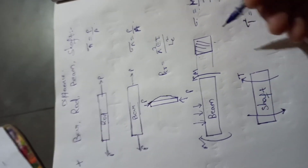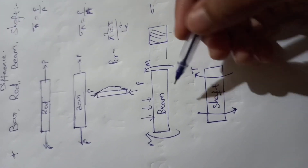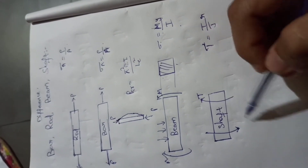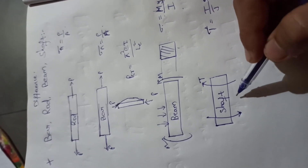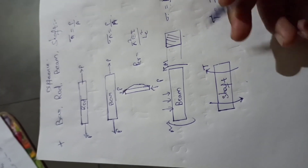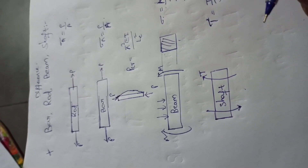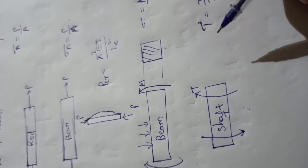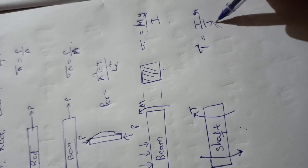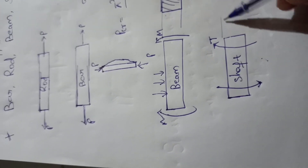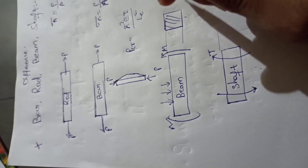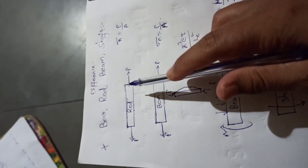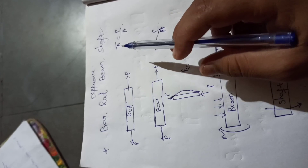A shaft is subjected to a torque — a twisting nature comes into picture. Shafts are generally subjected to torque and are used for power transmission in automobiles and various industries. When a shaft is subjected to torque, shear stresses are induced. The shear stress formula is T/J × r, where J is the polar moment of inertia. The cross-section of a shaft is generally circular, as seen with this pen as an example.